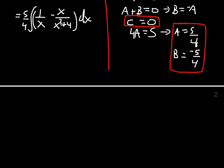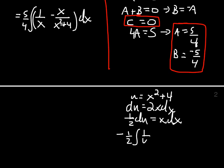For x over x squared plus 4, we're going to let u be the entire denominator, and du is 2x dx, where half of du is going to take the place of x dx. So we have minus 1 half the integral of 1 over u du, which is minus 1 half the natural log of u, which we'll convert back to be minus 1 half the natural log of x squared plus 4.